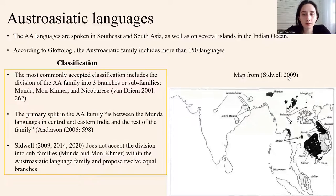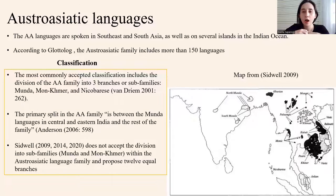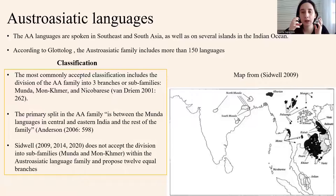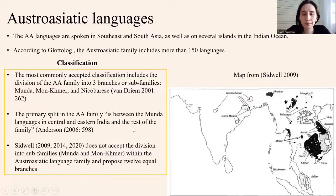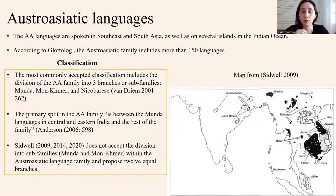The most commonly accepted classification includes the division of Austroasiatic languages into three or sometimes two branches: Munda, Mon-Khmer, and sometimes Nicobarese, also specified as a separate branch or subfamily. But the most recent classification by Sidwell does not accept the division into subfamilies Munda and Mon-Khmer, and he proposed 12 equal branches, like Khasian, Monic, Vietic, Khmer, Aslian, and so on.